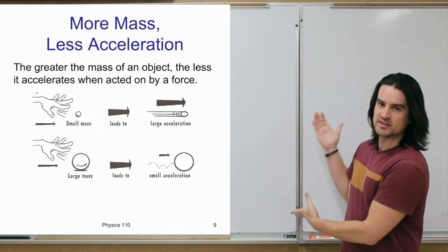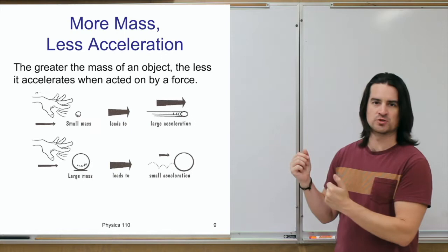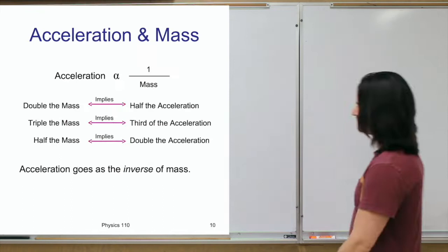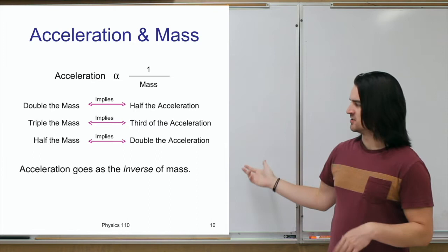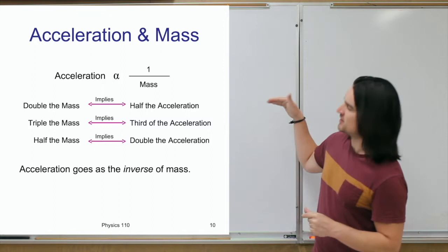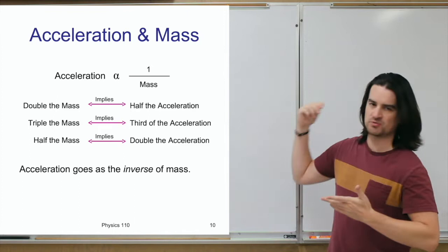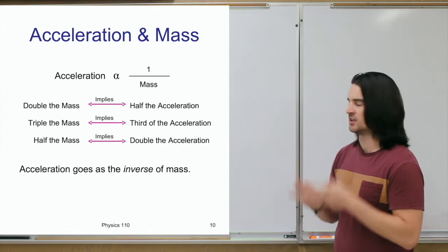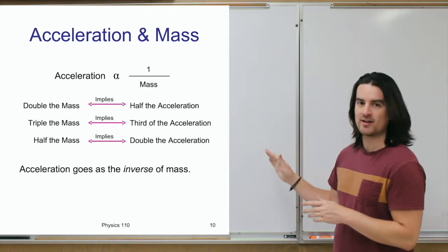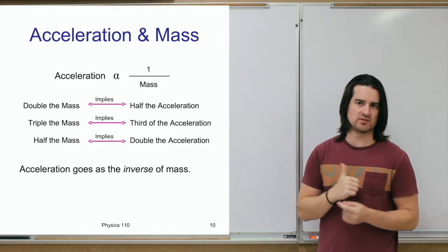This is an inversely proportional relationship. Mass and acceleration are inversely proportional to each other: acceleration is proportional to one over the mass. So if the mass is doubled with the same force applied, you get half the acceleration. If mass is tripled, you get one third the acceleration. If the mass is halved, the acceleration doubles.